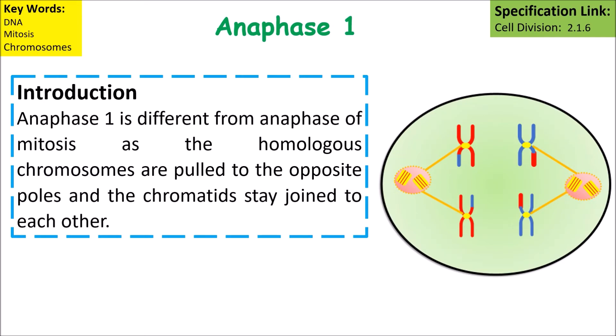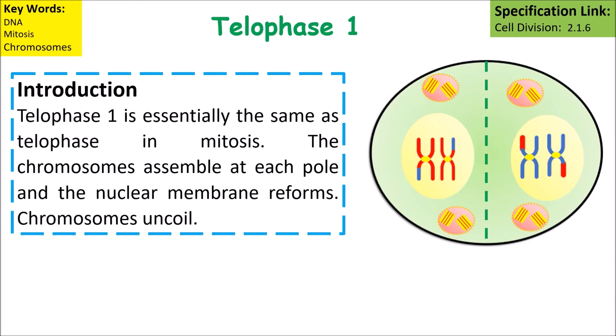Anaphase one is different from anaphase of mitosis, as the homologous chromosomes are pulled to opposite poles and the chromatids stay joined to each other. Telophase one is essentially the same as telophase in mitosis — the chromosomes assemble at each pole, the nuclear membrane reforms around the chromosomes, and the chromosomes uncoil.